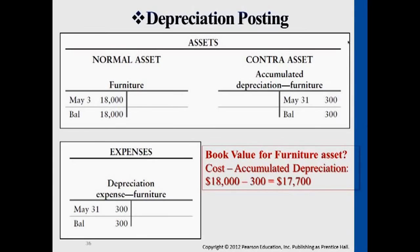The higher the amount you see under accumulated depreciation, that represents the longer the company has been owning and using this asset. So that account will only go up — later on you will have another $300, then another $300 after the third month. It will become $600, $900, $1,200 — it will just gradually accumulate. That at the same time represents that the book value of the furniture will gradually be reduced.